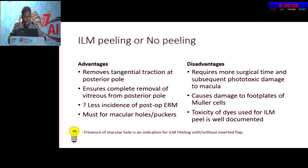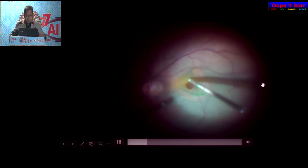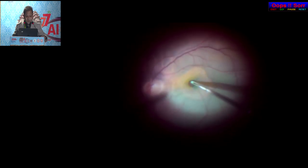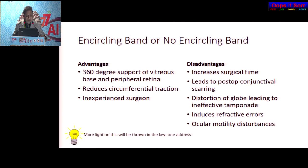ILM peeling or no peeling: presence of a macular hole is an indication for ILM peeling, with or without an inverted flap. Regarding encircling band: 360-degree support of vitreous base is provided by the encircling band, and it reduces circumferential traction. It is a must if you are not very experienced in doing vitrectomies — you should go in for an encircling band.